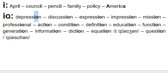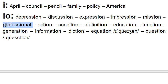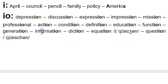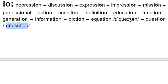Spellings I-O-N and O-N: depression, discussion, expression, impression, mission, professional, action, condition, definition, education, function, generation, information — this one should also be pronounced with a schwa — diction, equation. Be careful with equation because the sound changes from 'sh' to 'zh'. And also an exception: question — the T-I-O-N is pronounced like 'chwa', question.